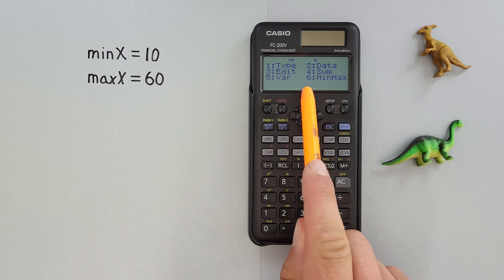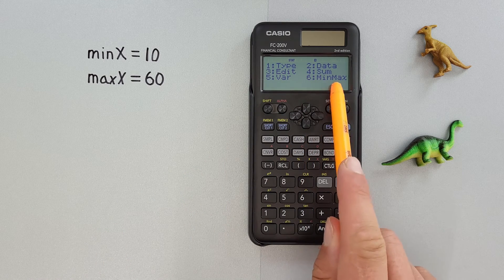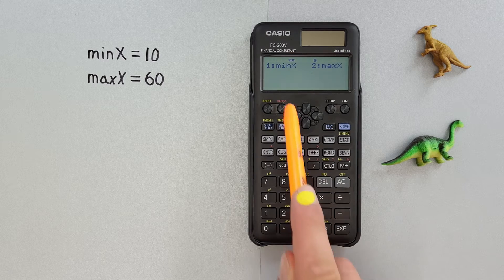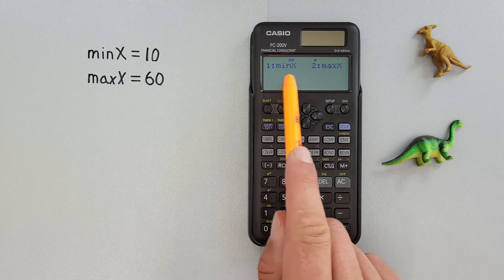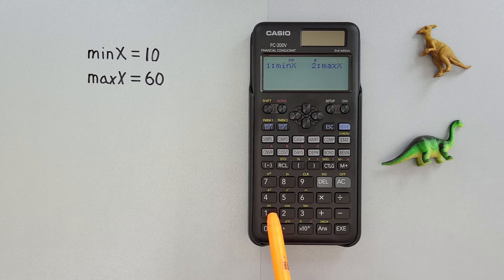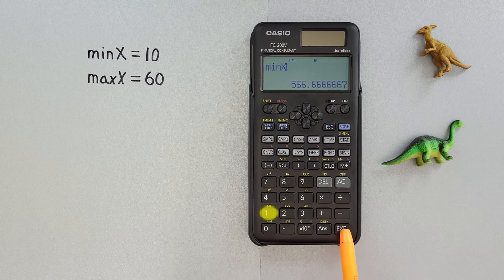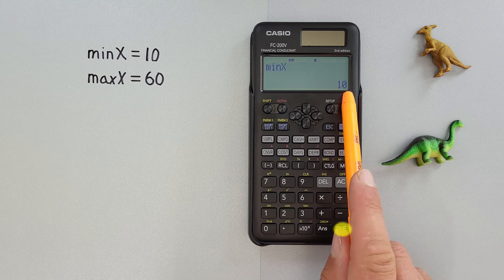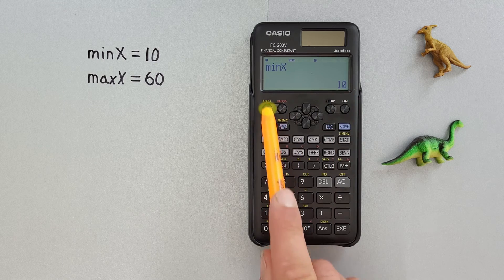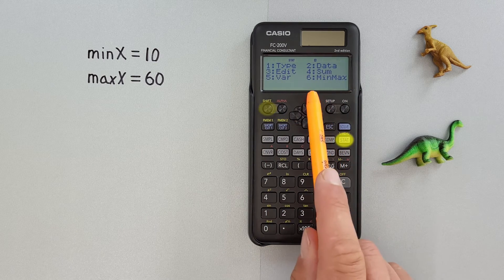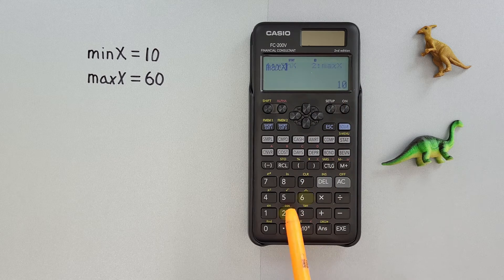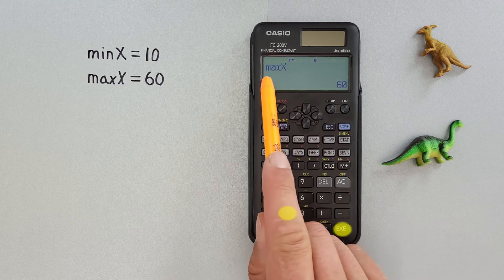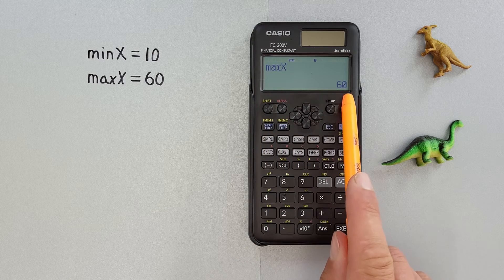And finally, we have number six, our min and max. So if we hit six, we see number one is our minimum x or our minimum number in our dataset, which is 10. And if we select our max, number two, we see we get the max is 60.